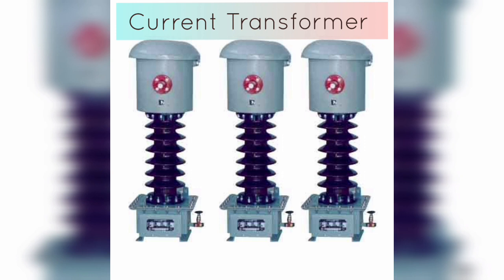An electrical current transformer (CT) is a type of instrument transformer used to measure high levels of electrical current in power systems. CTs work on the principle of electromagnetic induction, where a changing magnetic field induces a voltage in a conductor. The primary winding of a CT is connected in series with the conductor carrying the high current to be measured. The secondary winding is connected to a measuring instrument such as a meter or relay, and provides a reduced current output proportional to the original current. The ratio of primary to secondary windings determines the amount of current reduction.